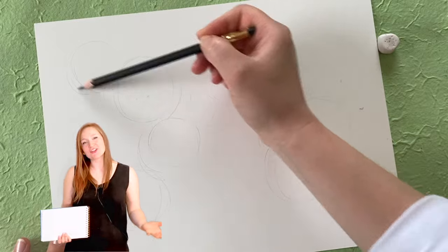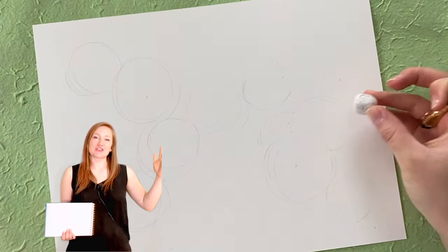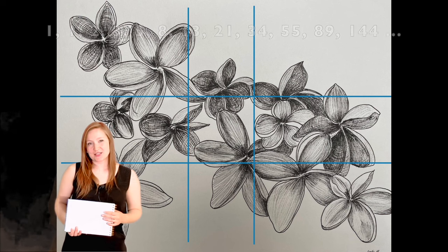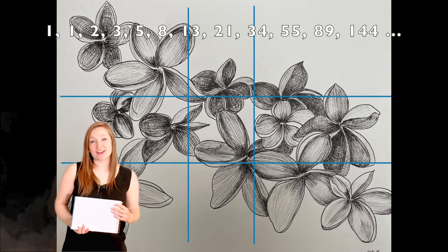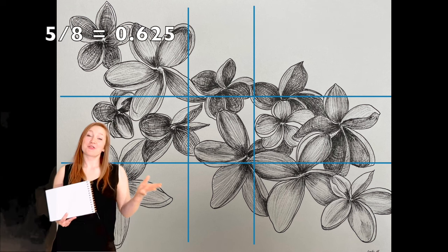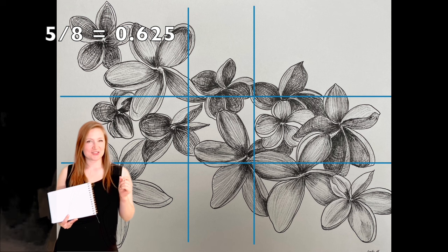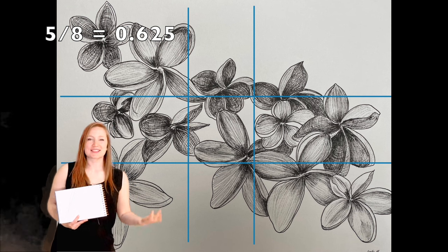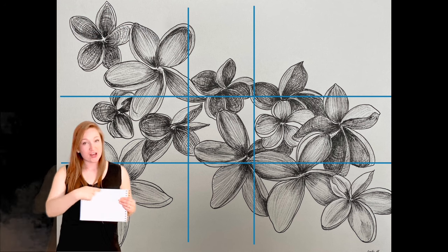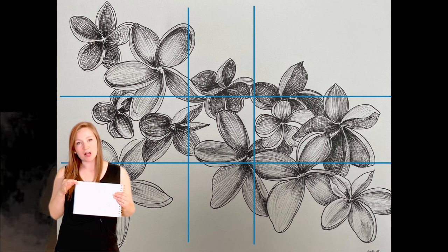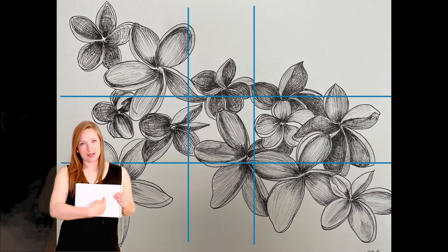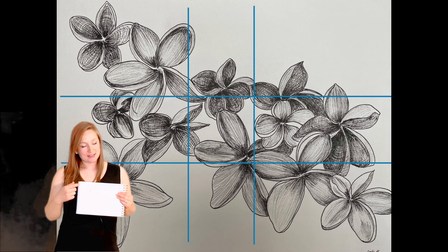Once you've done a few compositions using the rule of thirds, there's another next-level step: the rule of five-eighths. Five and eight both appear in the Fibonacci sequence. When you divide eight by five, you get 0.625 — just a smidge different from 0.618, but it's still good to use.